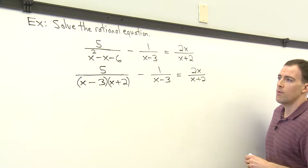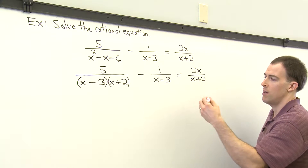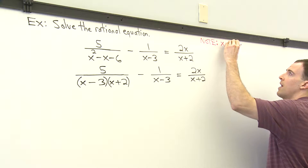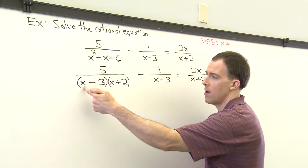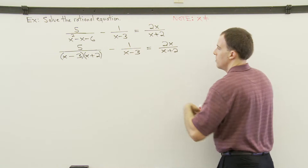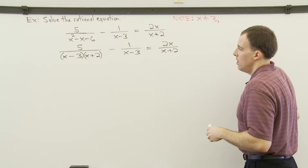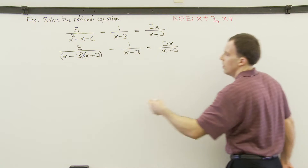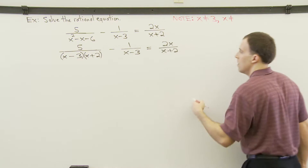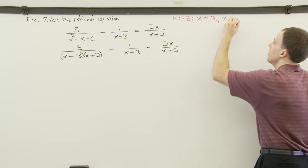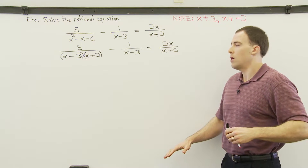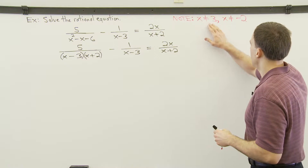The next thing to do is to write down any restricted values — those are values of x that make any fraction undefined. I'll make a note here so I remember this later when we check our answers. X cannot equal 3, because 3 minus 3 would be 0, making the first denominator and the second denominator 0. Also, x cannot equal negative 2, because negative 2 plus 2 would make that factor 0, zeroing out those denominators. If we get either of those values when solving, we'll conclude that it's not a solution.